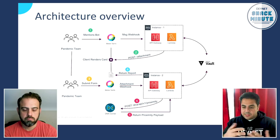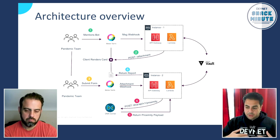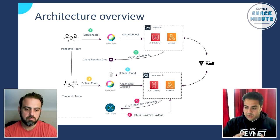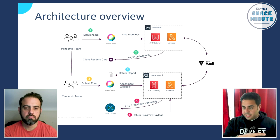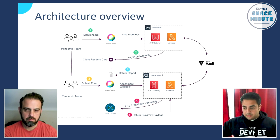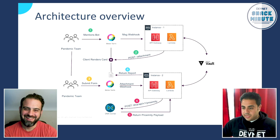Here's the overall architecture. There are three pieces from a housekeeping perspective. When you're talking to a bot, you have to register a messaging webhook. When you're interacting with the adaptive card UI, you have to register an attachment webhook. And from a DNAC perspective, when you're asking for the proximity data, you have to register a webhook to an endpoint to receive that payload whenever you trigger that event. I took all three together and leveraged AWS infrastructure with API Gateway and a Lambda function as my endpoint and Python to process. And I leveraged Vault for tokens for all of the authentication.